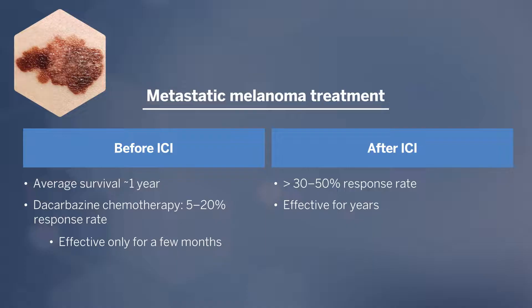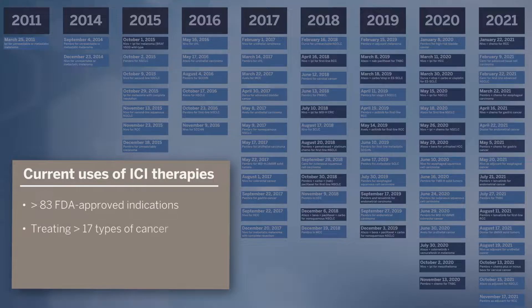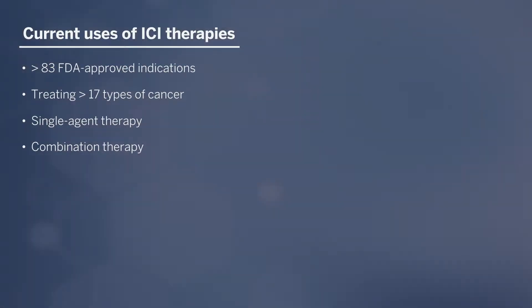It's a true breakthrough therapy. And since that time, there are now over 83 FDA-approved indications, as you can see here, in over 17 types of cancer. The light blue boxes show single-agent immune checkpoint inhibitor approvals, but the dark blue show combinations. So we are starting to combine an immune checkpoint inhibitor with another immune checkpoint inhibitor, or immune checkpoint inhibitor with chemo, or immune checkpoint inhibitor with targeted therapy. Combinations are truly the way forward.